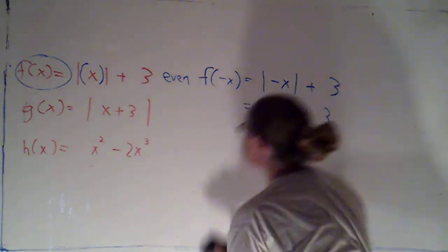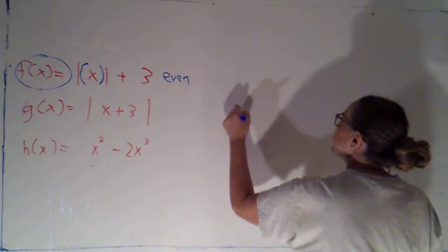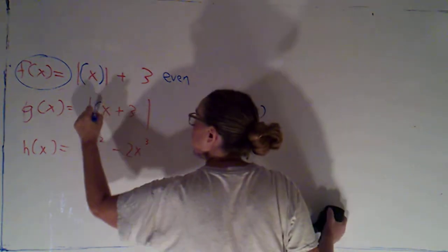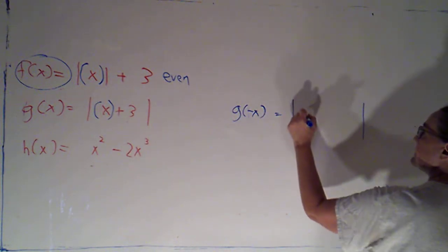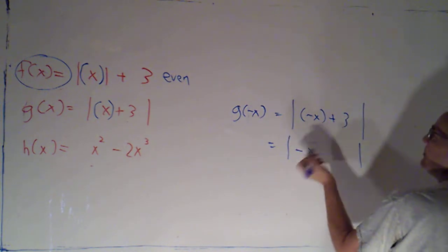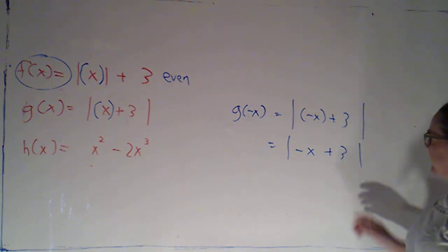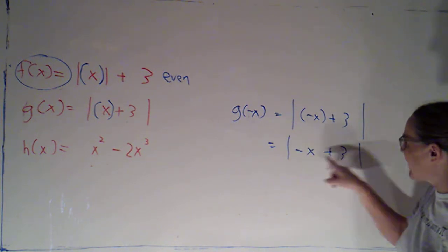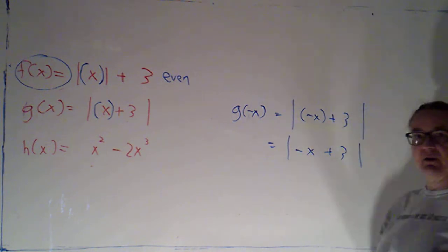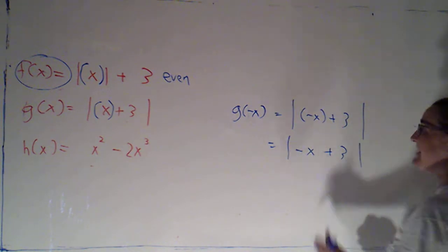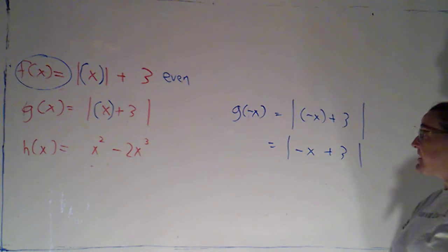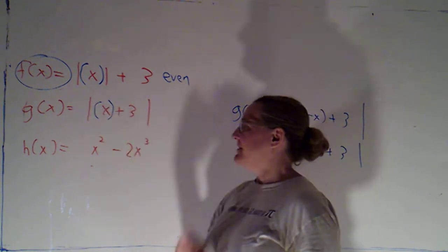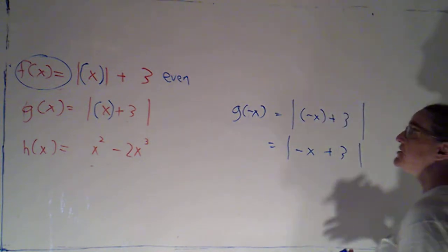Let's take a look at g of x next. For g of x, it's the same test — I'm going to evaluate g at the opposite input, replacing that x with the opposite of x. But I just got the absolute value of the opposite of x plus 3. I can't use the absolute value to obliterate that negative sign, because the negative sign only applies to that term, not to the 3, but the absolute value applies to the whole thing. So this formula is not the same as the formula for g of x, but it's also not exactly the opposite of that — because this formula gives something that's never negative, while the opposite of g of x would give something negative. So this one is neither.